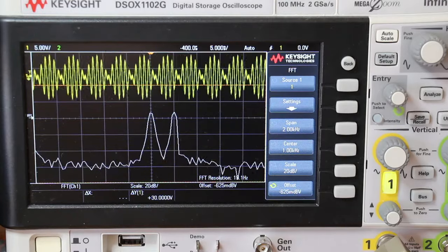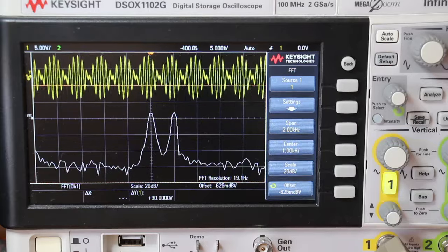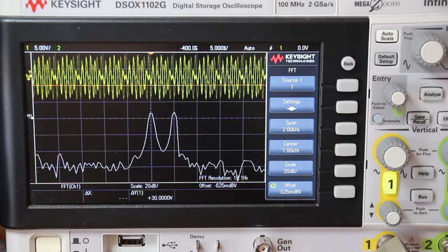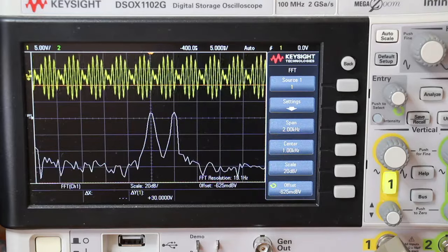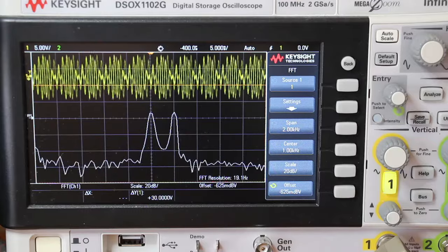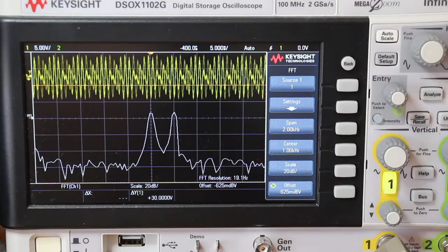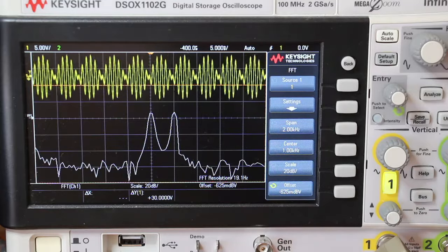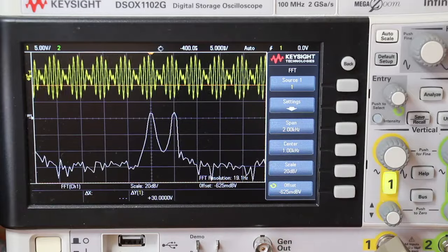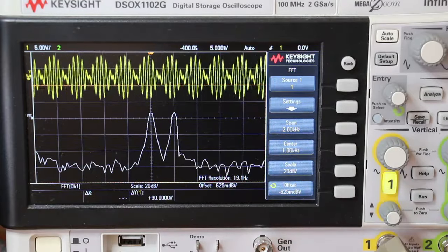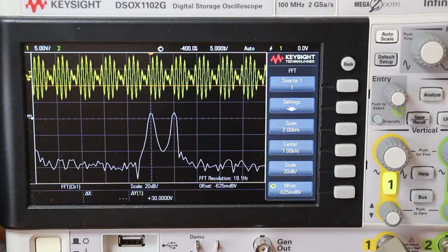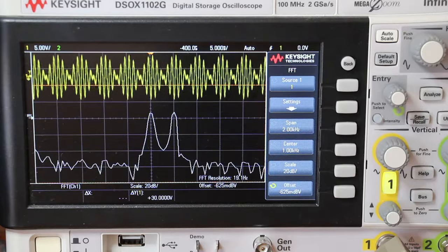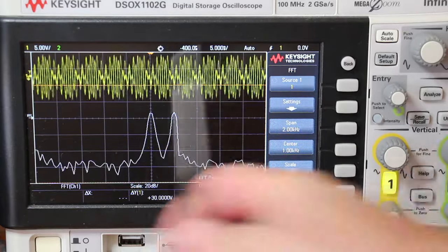For this very first test I'm using this entry-level instrument, the Keysight DSOX-1102G. It has a maximum frequency of 100 MHz. I set the FFT display for a span of 2 kHz and the center frequency is 1 kHz, so the difference between vertical lines is 200 Hz. Unfortunately this instrument can't show the level in dBm, but we can see clearly the two tones on the display.